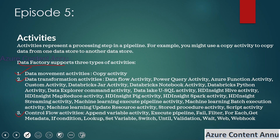For data movement, we have the copy data activity to move data from a source to a sink. Apart from copy data activity, we can also use data flow activity to load data from source to sink, though data flow is majorly used for data transformation. In ADF, data flow is called the data transformation tool, but both copy data activity and data flow activity can be used for data movement.